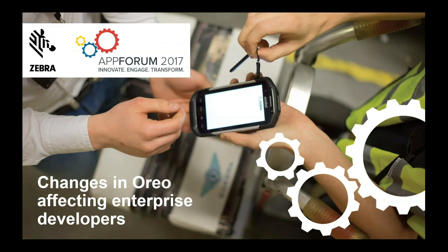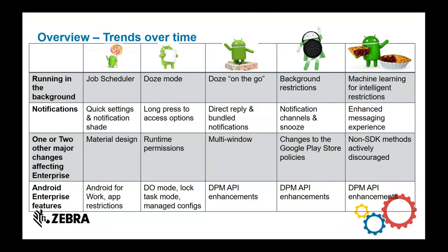Moving on to the changes that Google have introduced in Oreo — features that developers for our devices, or for any enterprise device, need to be aware of. I put this hero slide together. I've been talking about this kind of topic since Lollipop and Marshmallow days, and we've noticed a number of trends over time. The trends are the rows here: restricting what the application can do in the background. This is one of the major topics we'll be covering. This introduces new restrictions on background apps or new APIs to help apps manage their power in the background. Background restrictions were added in Oreo. In Android Pie, we see things like machine learning standby buckets.